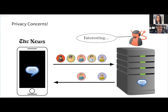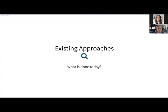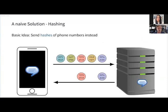So the standard mobile contact discovery procedure may have some privacy concerns that we want to improve. A very naive solution that many of you have probably thought of already is: what if we just hash all of the contacts — all of the phone numbers — and send the hashes of these phone numbers to the server instead?